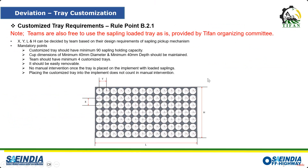We have provided a customized tray requirement because many teams were having issues — with a dense tray it is hard to pick individual saplings out. We've provided some leverage to teams so they can use their own customized tray, with certain requirements clearly mentioned in the rulebook. Make sure to go through every point properly before starting to manufacture your own customized tray.